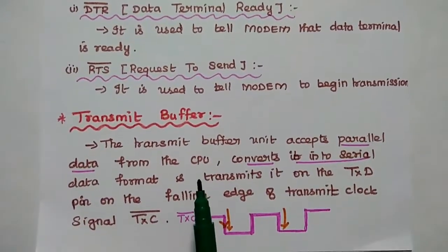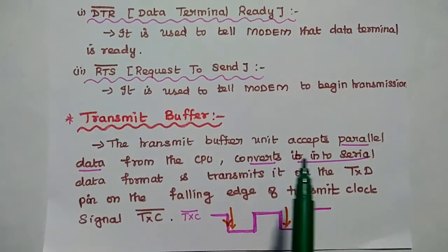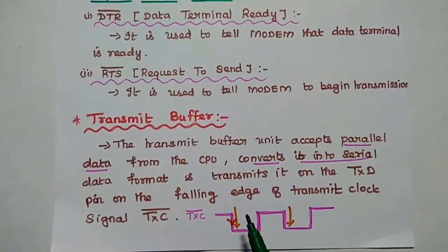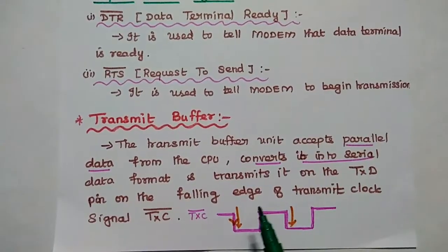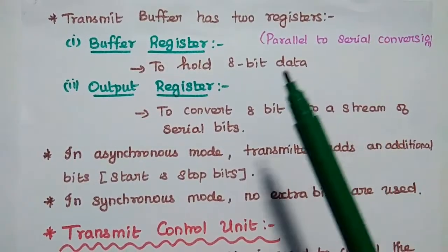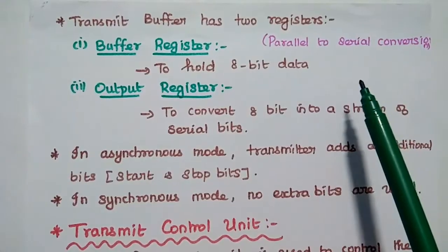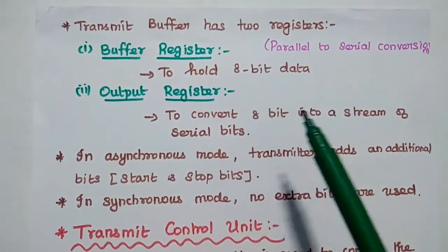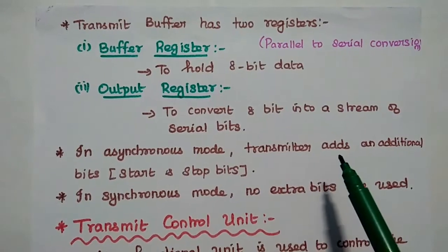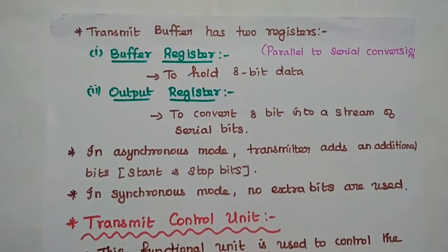The transmit buffer accepts parallel data from the CPU and converts it into serial data format, then transmits it on the transmit data pin. Transmission uses its own clock cycle; TXC transmits data during the falling edge of the clock. The transmit buffer has two registers: a buffer register to hold the 8-bit data to be transmitted, and an output register that converts 8-bit parallel data into serial data. In asynchronous mode, the transmitter adds start and stop bits, but in synchronous mode, no extra bits are added.